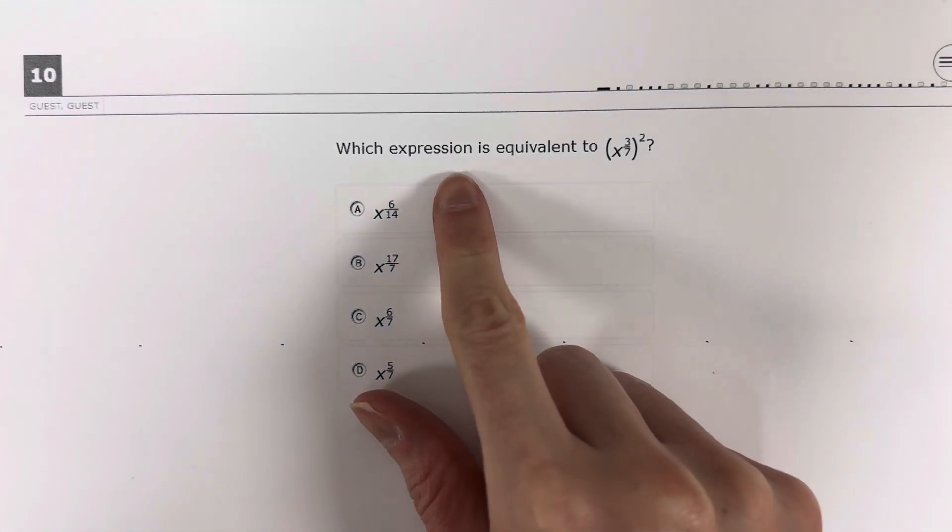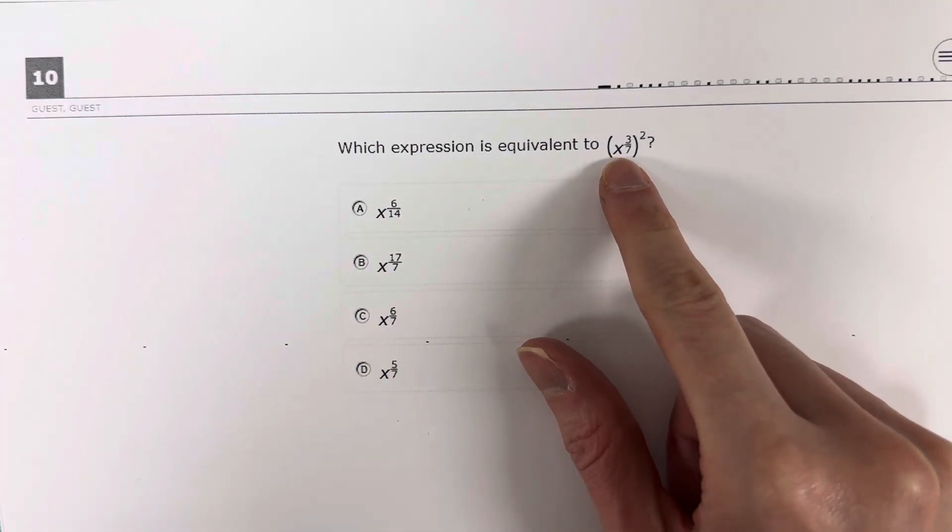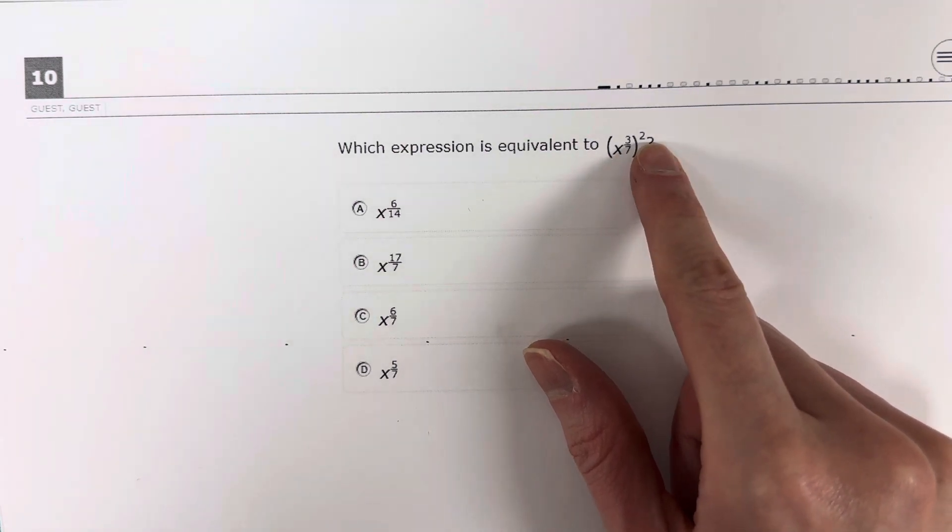Question 10. Which expression is equivalent to x to the 3/7 power squared?